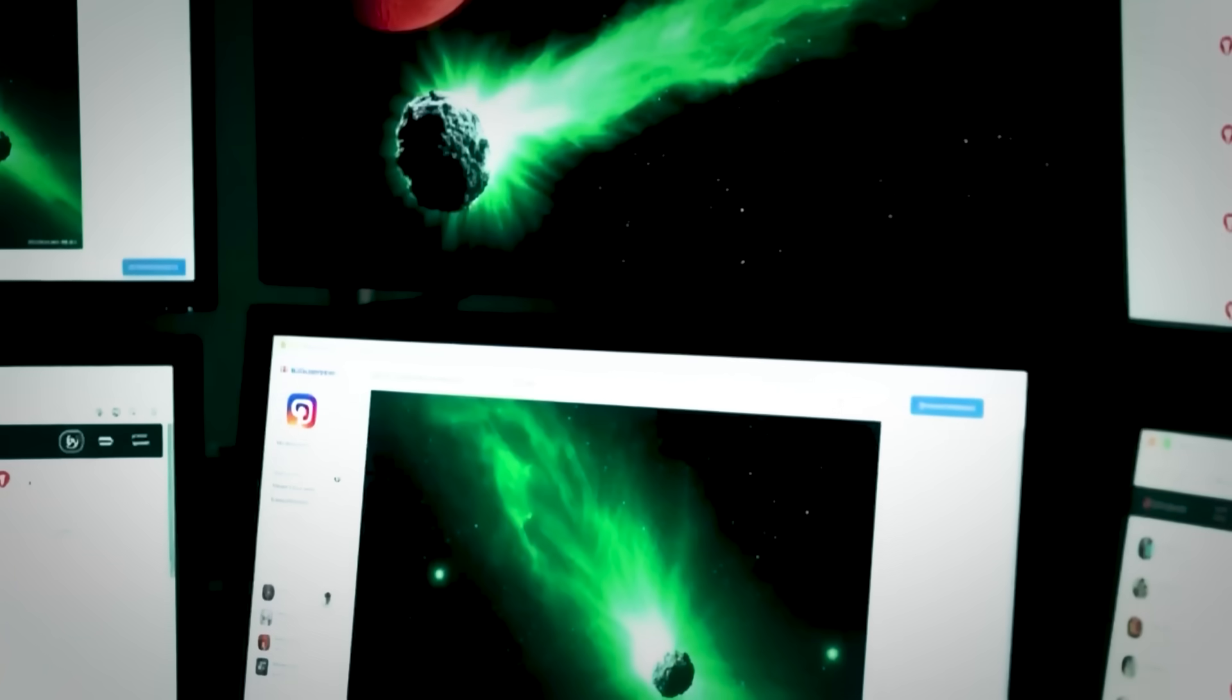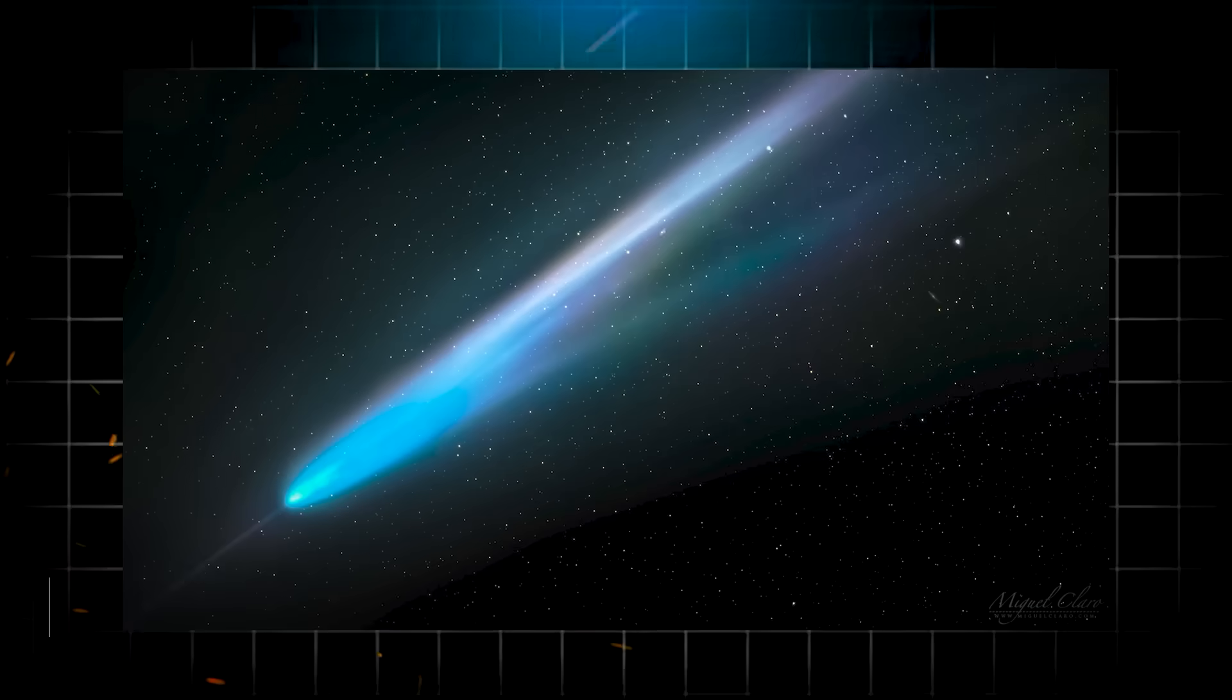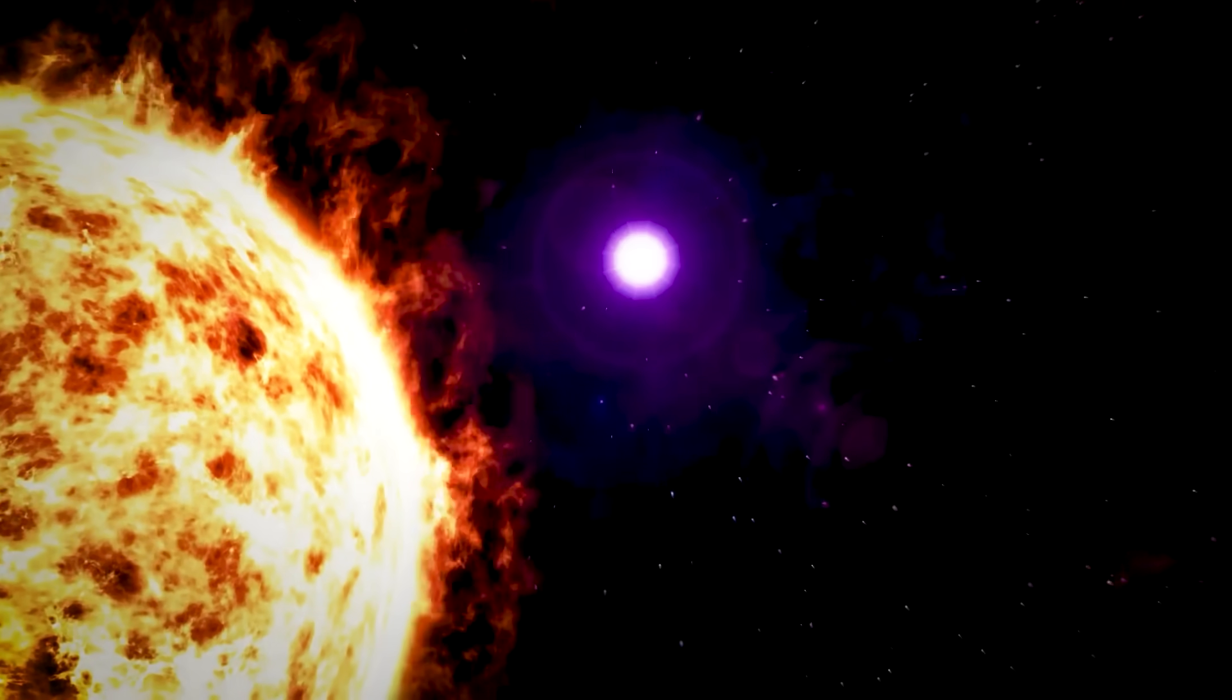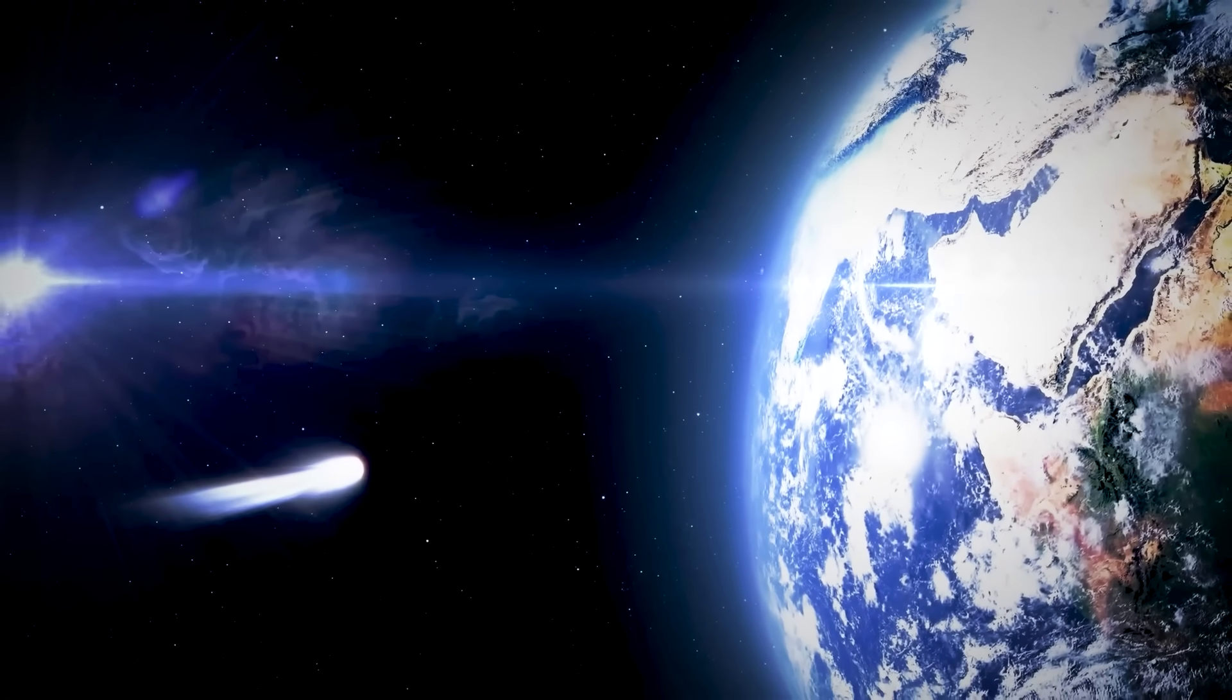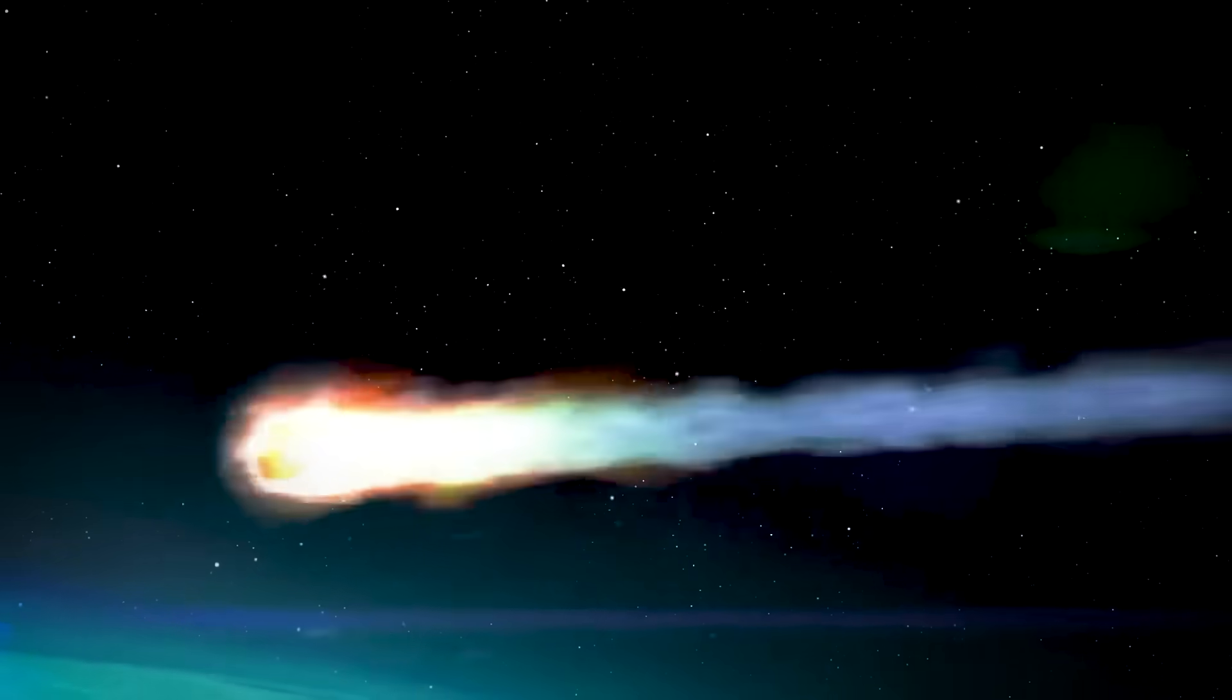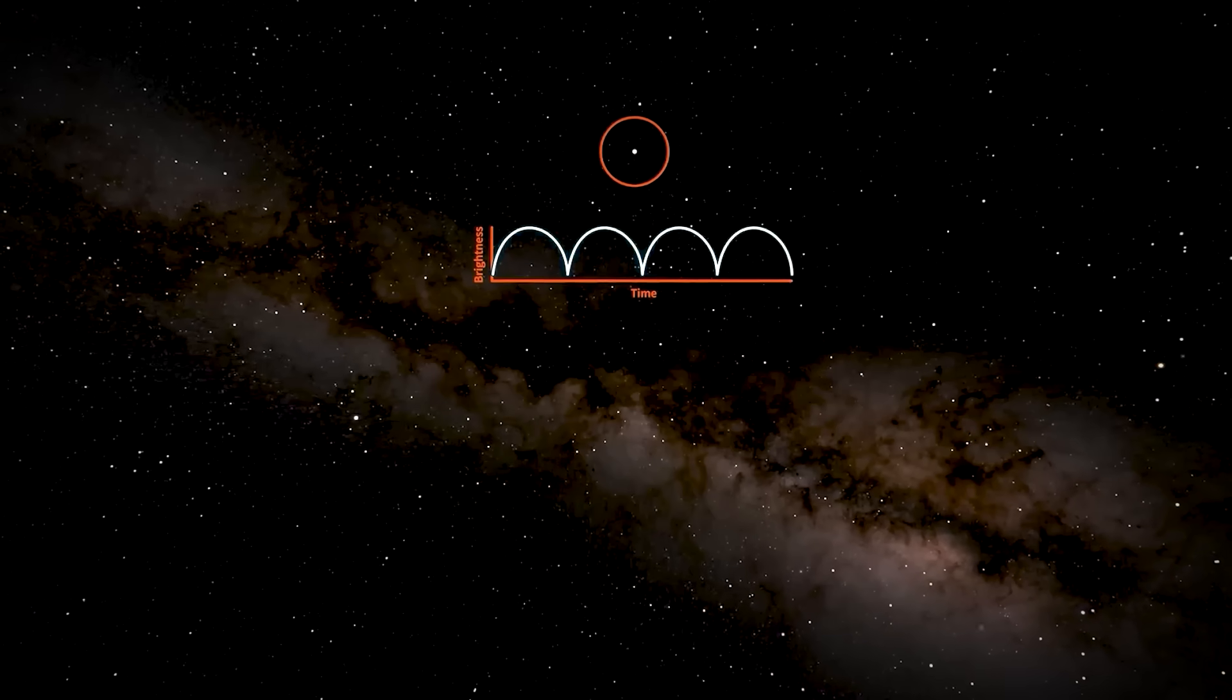The second anomaly is even more disturbing. As the object approaches our sun, it's developing what astronomers call an anti-tail, a stream of material that points directly toward the sun instead of away from it. This violates basic physics. Solar radiation should push material away from the sun, not toward it. It's like watching water flow uphill. The anti-tail stretches for thousands of miles and glows with an eerie green light that indicates the presence of carbon-based molecules. But here's the kicker. Early spectroscopic analysis of 3I Atlas showed no significant carbon content. So where is this green glow coming from?